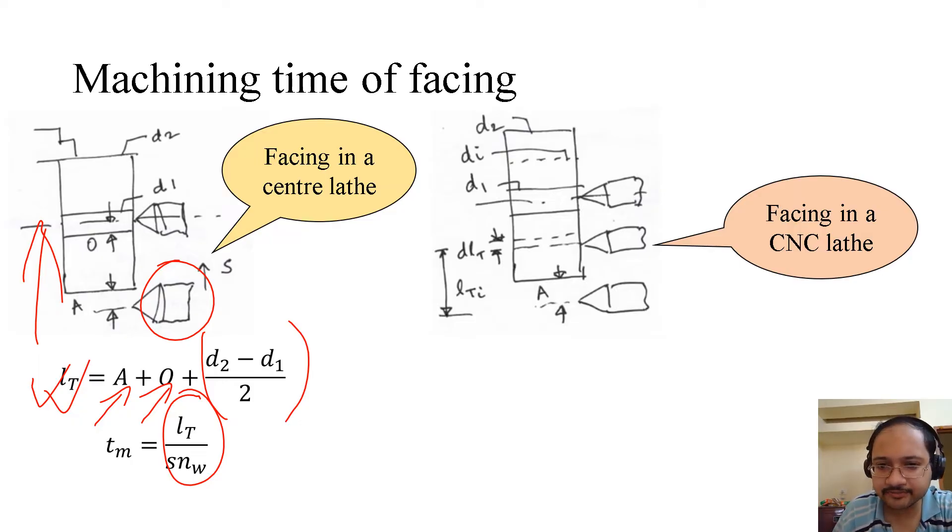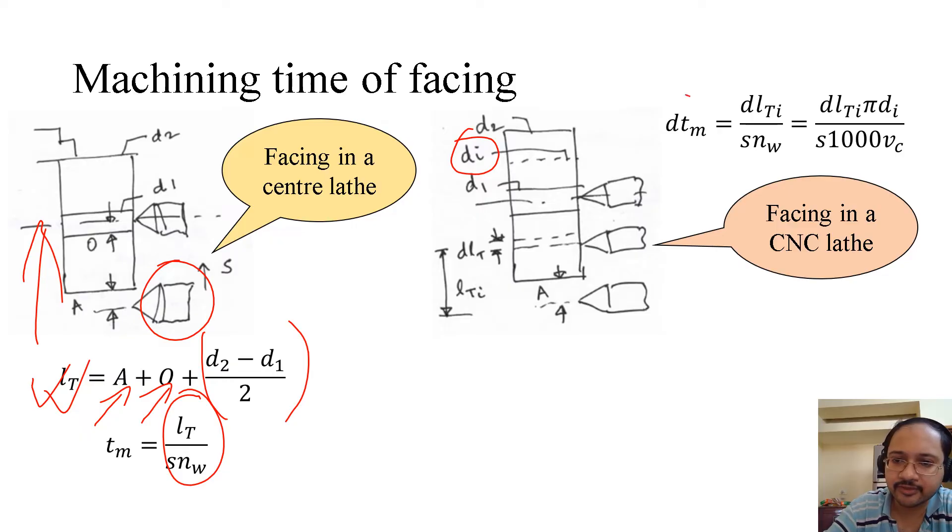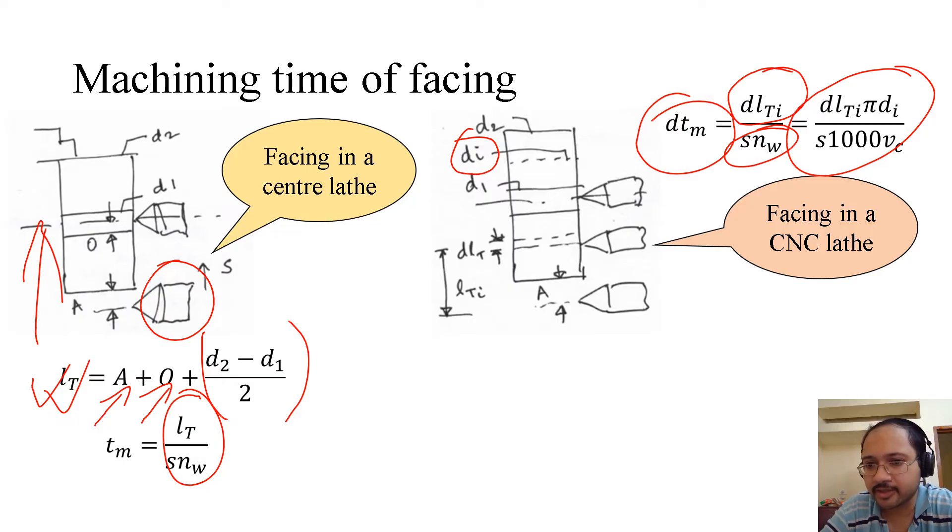Coming to facing in a CNC lathe, we have to remember that in case of a CNC lathe, VC is fixed and all calculations we do based on instantaneous diameter, instantaneous rotations, instantaneous machining time and then we integrate over that differential amount. To begin with, dTm, the differential machining time, equals to differential total tool travel over SNW. Why? Because NW equals to 1000 VC by π Di, that instantaneous rotation.